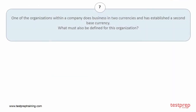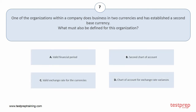Question number 7. One of the organizations within a company does business in two currencies and has established a second base currency. What must also be defined for this organization? Option A: Valid financial period. Option B: Second chart of account. Option C: Valid exchange rate for the currencies. Option D: Chart of account for exchange rate variances. The correct answer is option C.